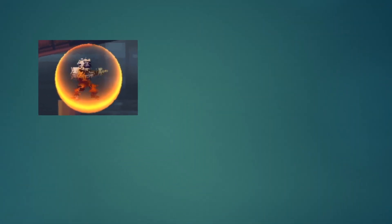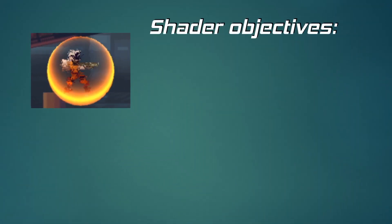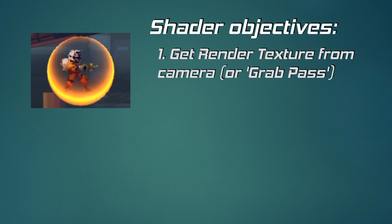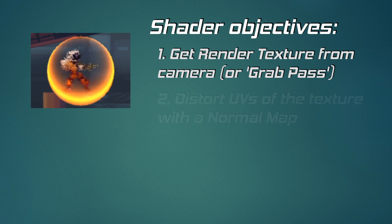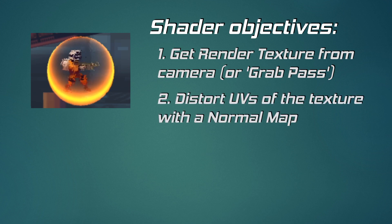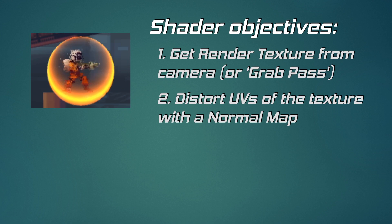Let's set some objectives so we can easily analyze this shader. First we need to get a copy of the screen image being rendered. We also want to distort that screen image but only where our shield object is located at. For practical purposes we will be using a normal map, but remember you can also distort the texture manually with a mathematical function.